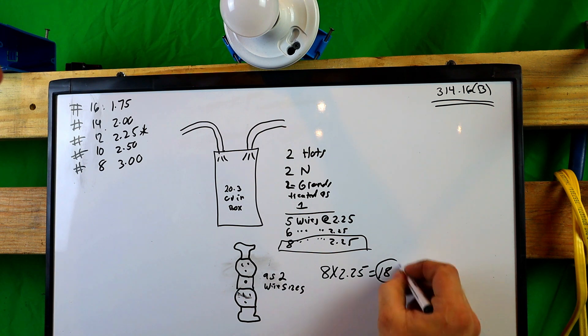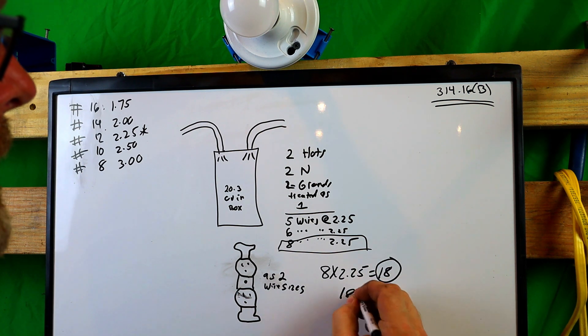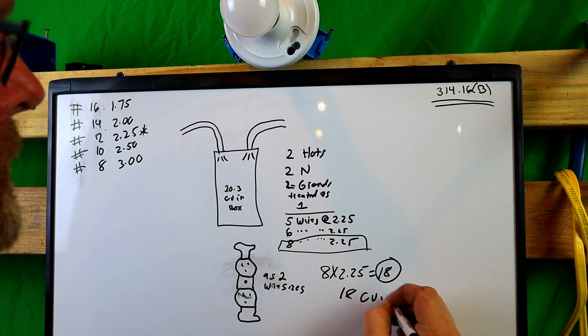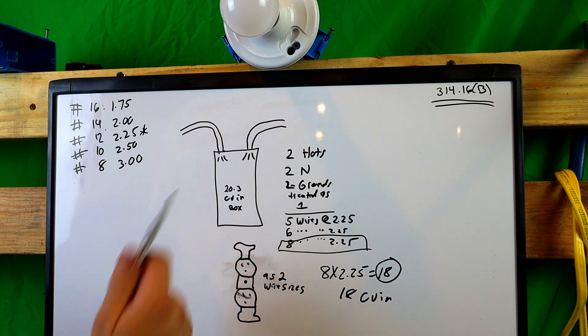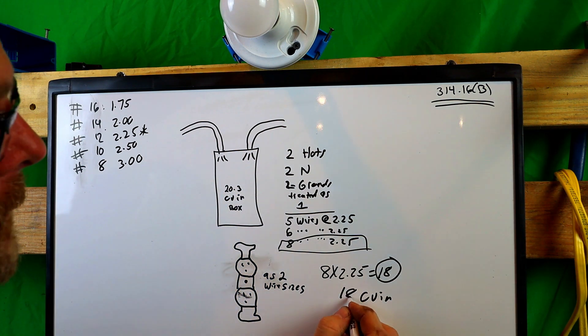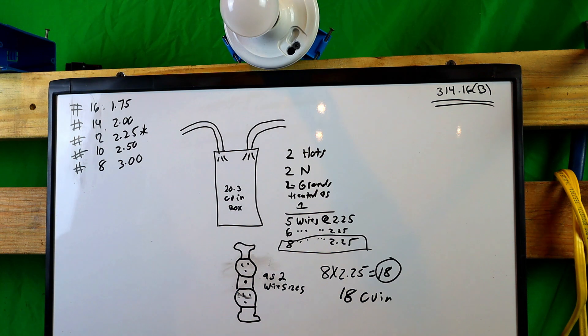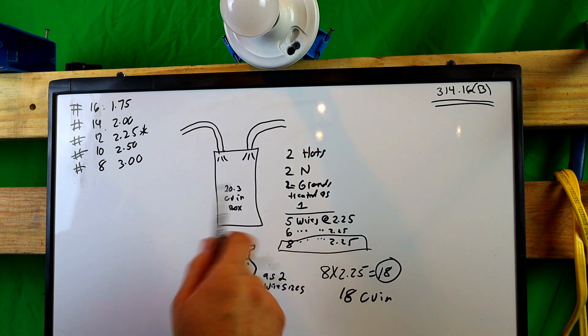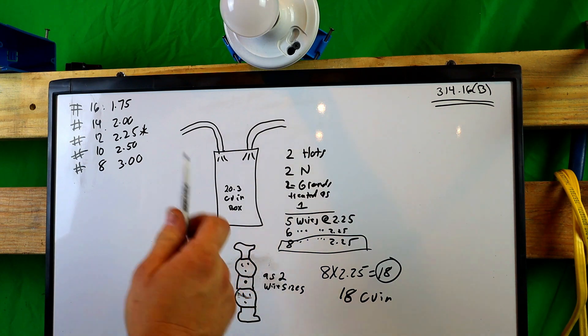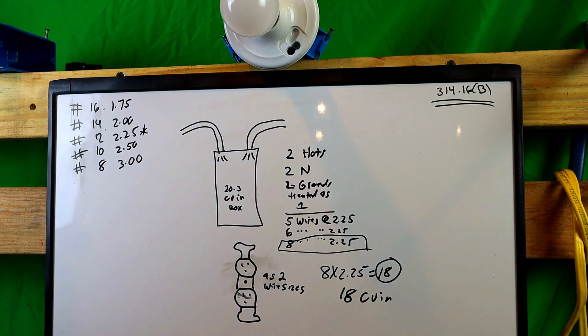So we have to do eight times 2.25 and that equals 18. So that's our number, 18 cubic inches. Now, this is how much this box will allow 20.3 cubic inches. And we have, well, that's a terrible, I'm a terrible writer also. Anyway, all this equals 18 cubic inches. So you definitely will have enough space.